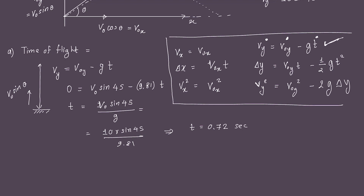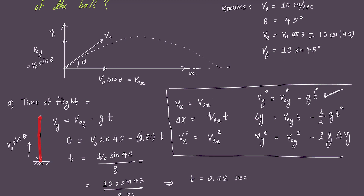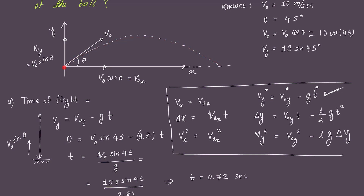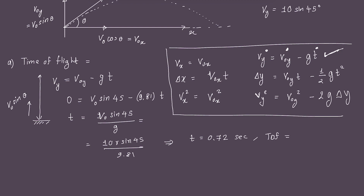This 0.72 seconds is the time for the ball to reach its highest point. Since we've broken the problem into independent X and Y dimensions, the total time of flight — from launch back to the ground — is double this amount. Total time of flight = 2 × 0.72 = 1.44 seconds.